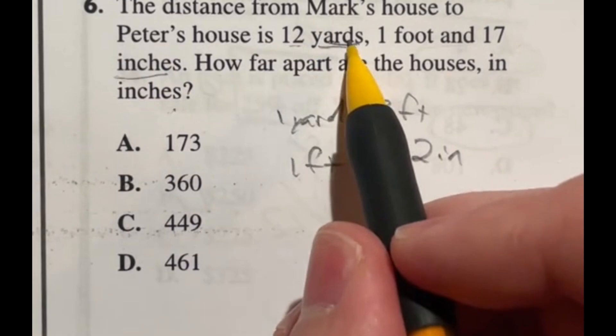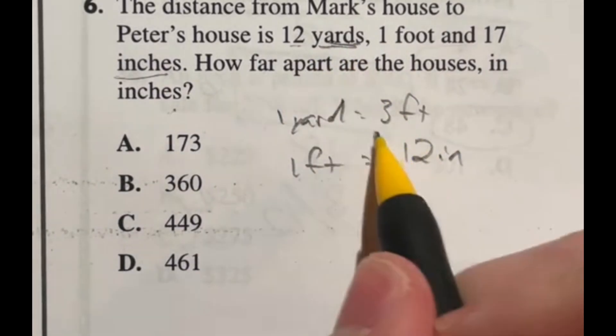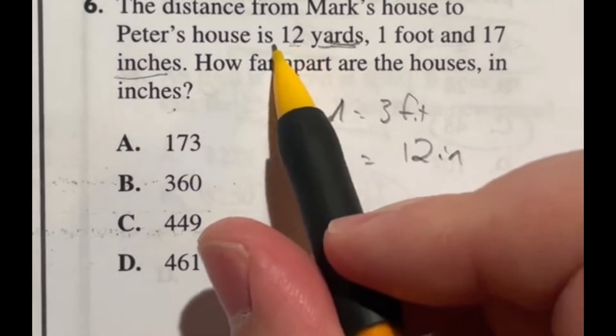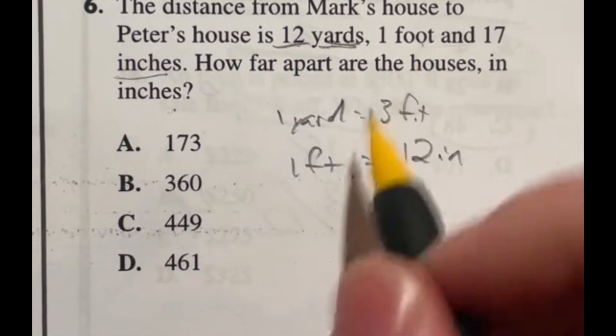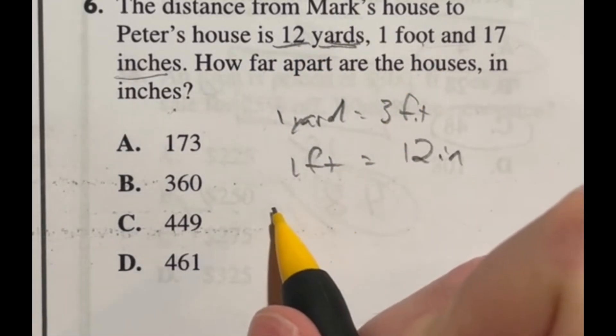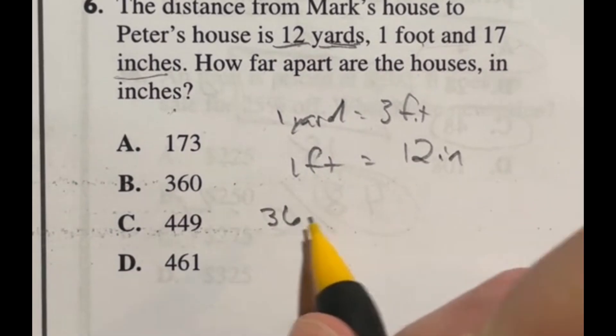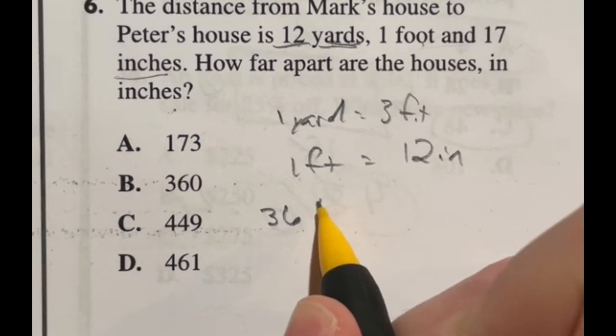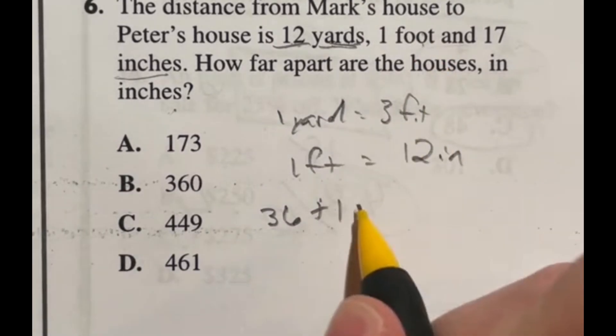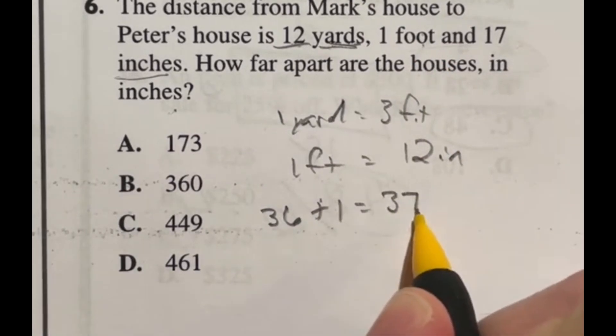First, let's start with those 12 yards. If one yard is three feet, then we just need to multiply 12 by three to get us to feet. So 12 times three gives me 36. So now we have 36 feet plus the one foot we still had for a total of 37 feet.